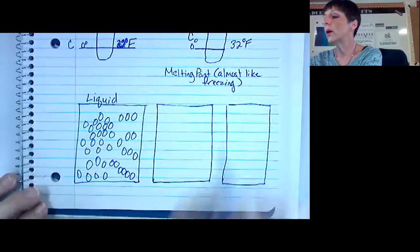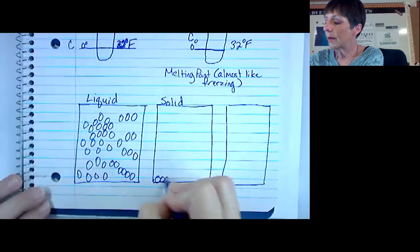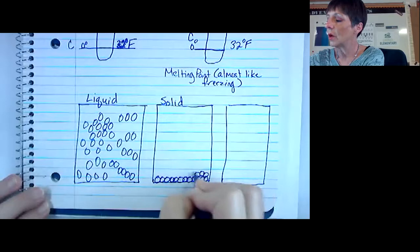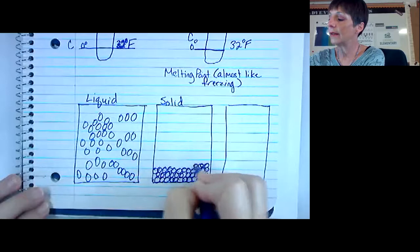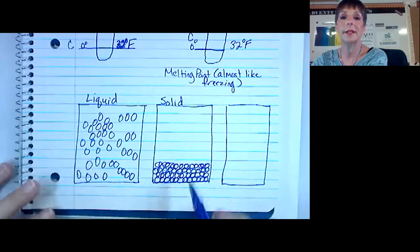For a solid, they begin to get very compacted. You saw this, I think, in the Generation Genius video. We saw that the particles get pushed together so tightly that they start to form a solid, so they're not free floating. They can't fill in a liquid. I'm not going to fill in the whole box, but you get the point. So a solid, the particles are really tight together.